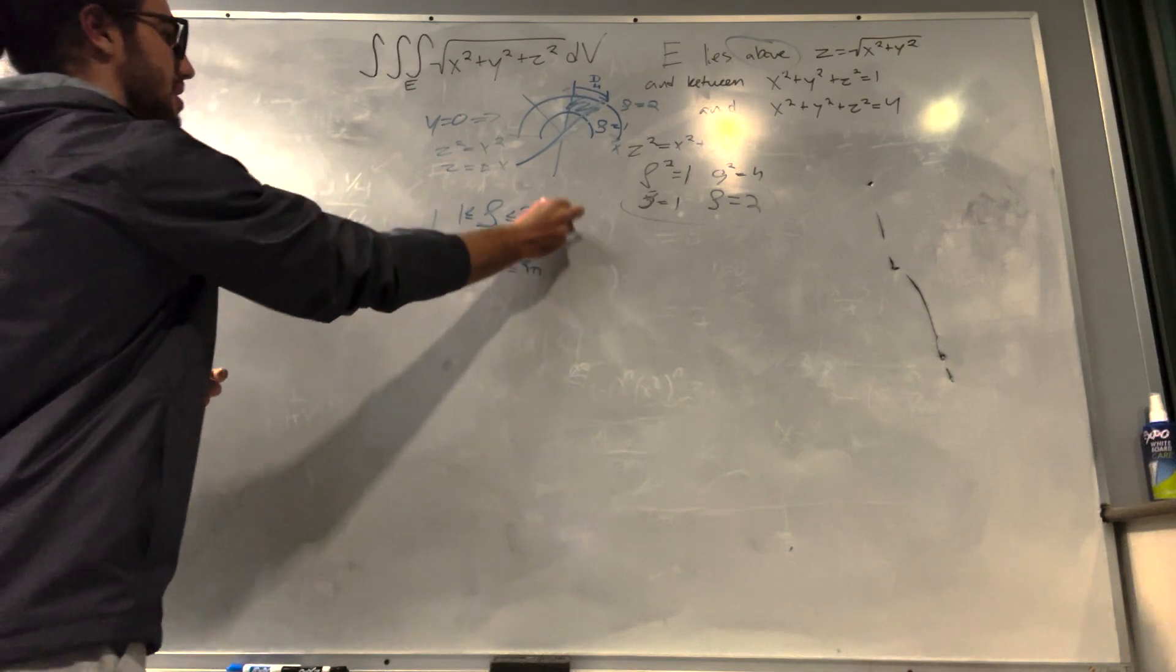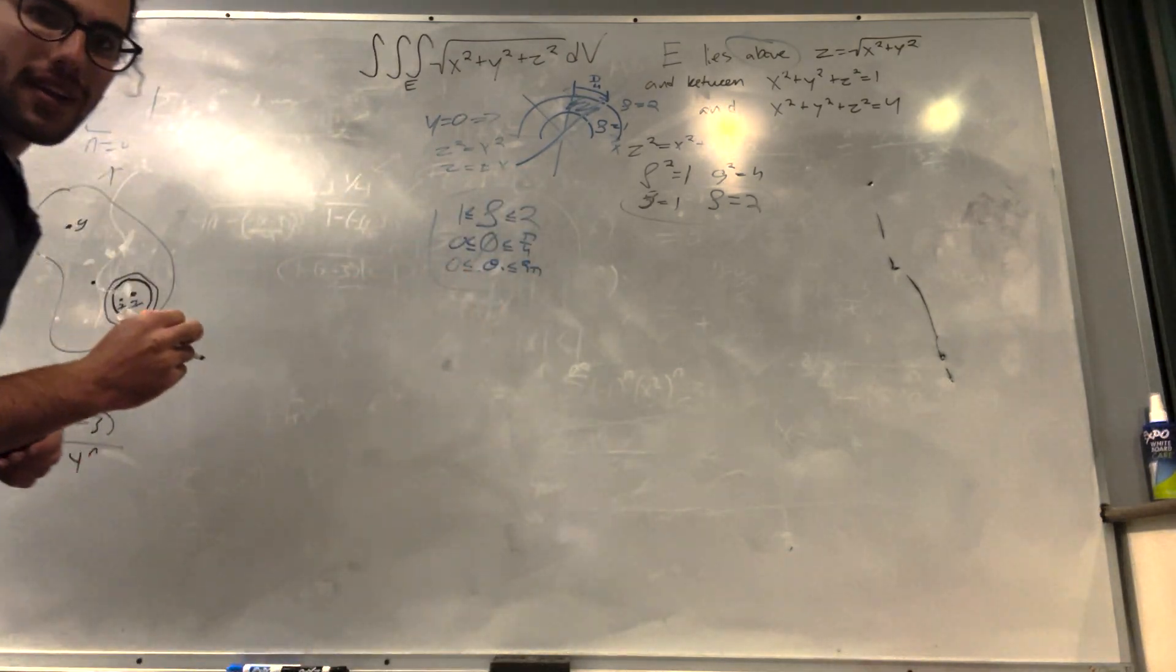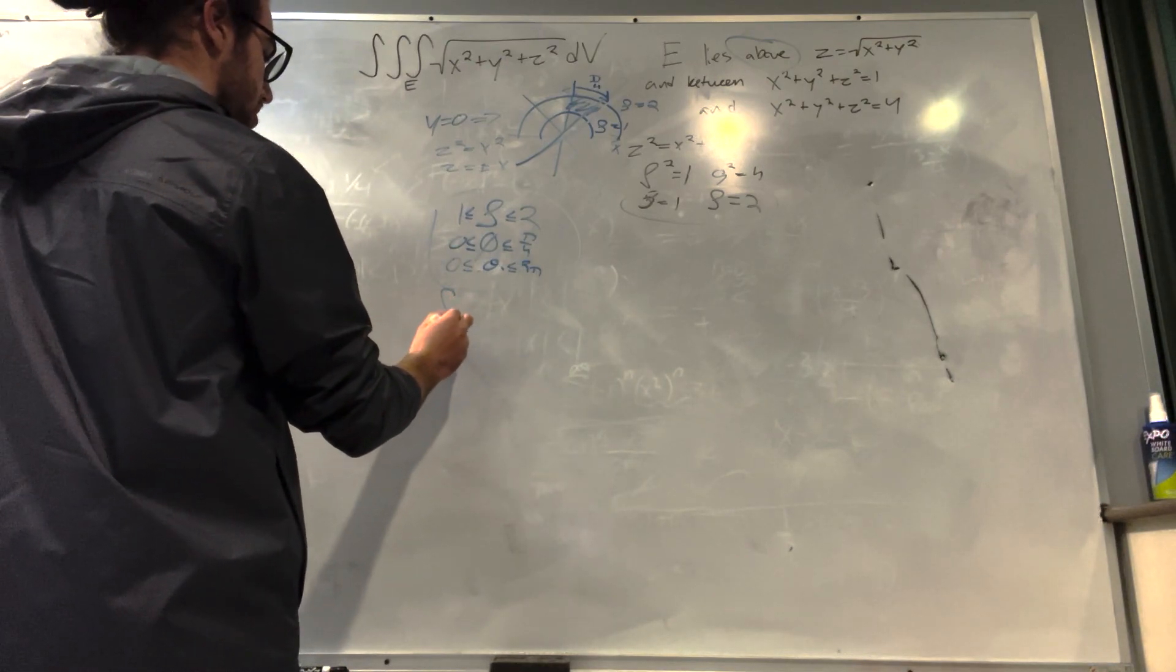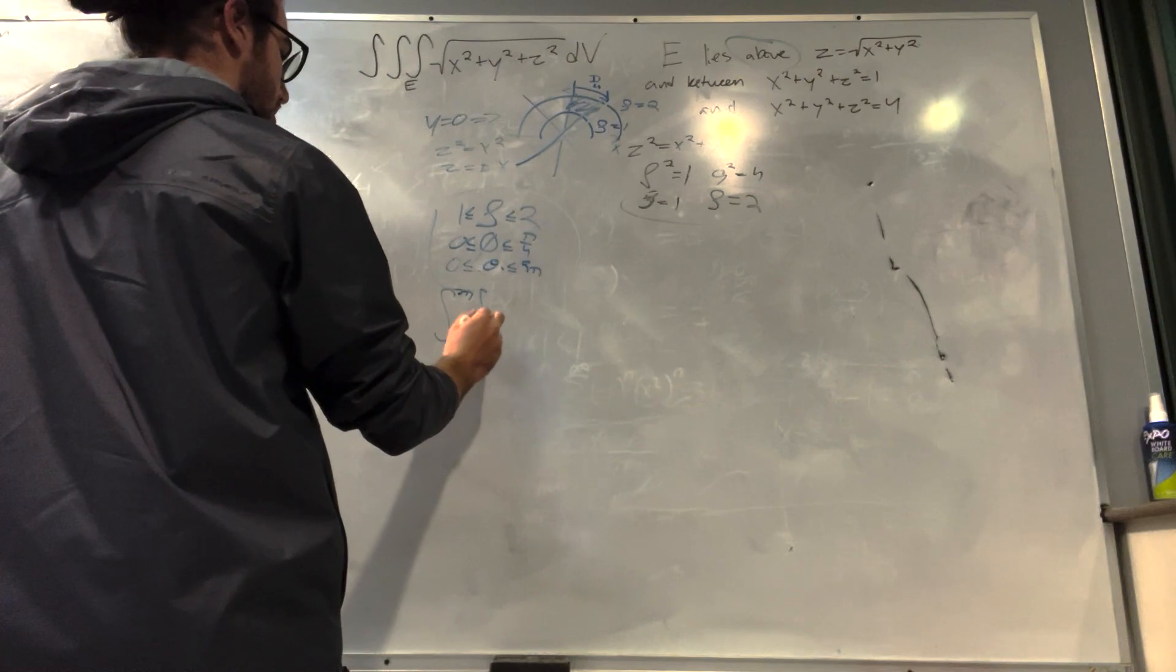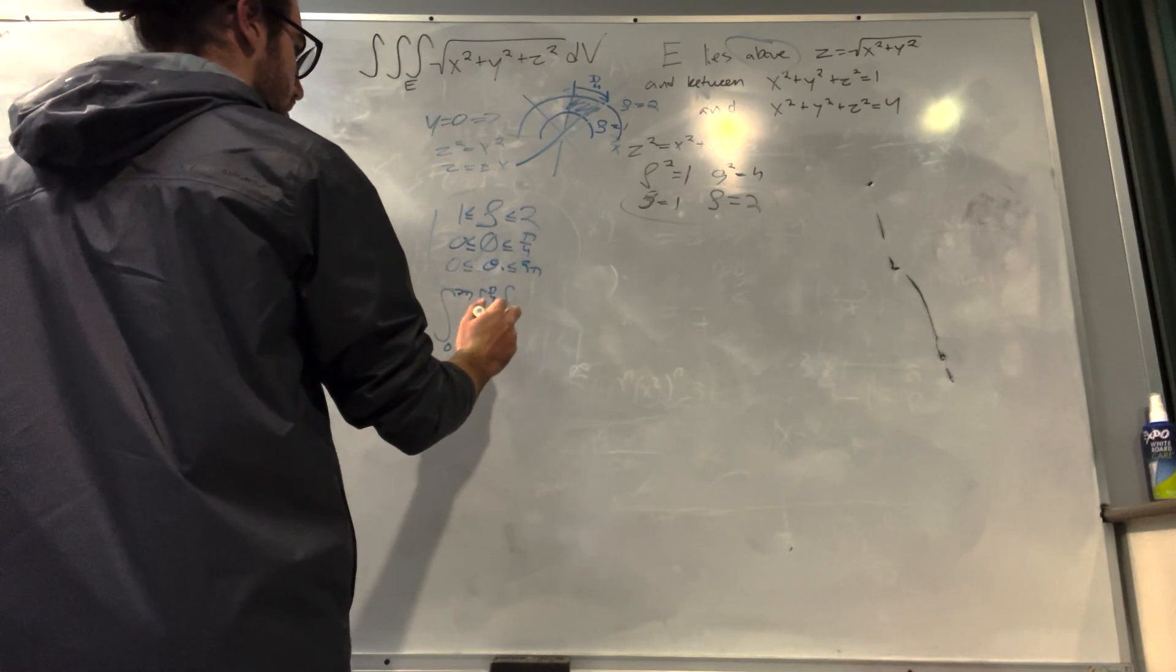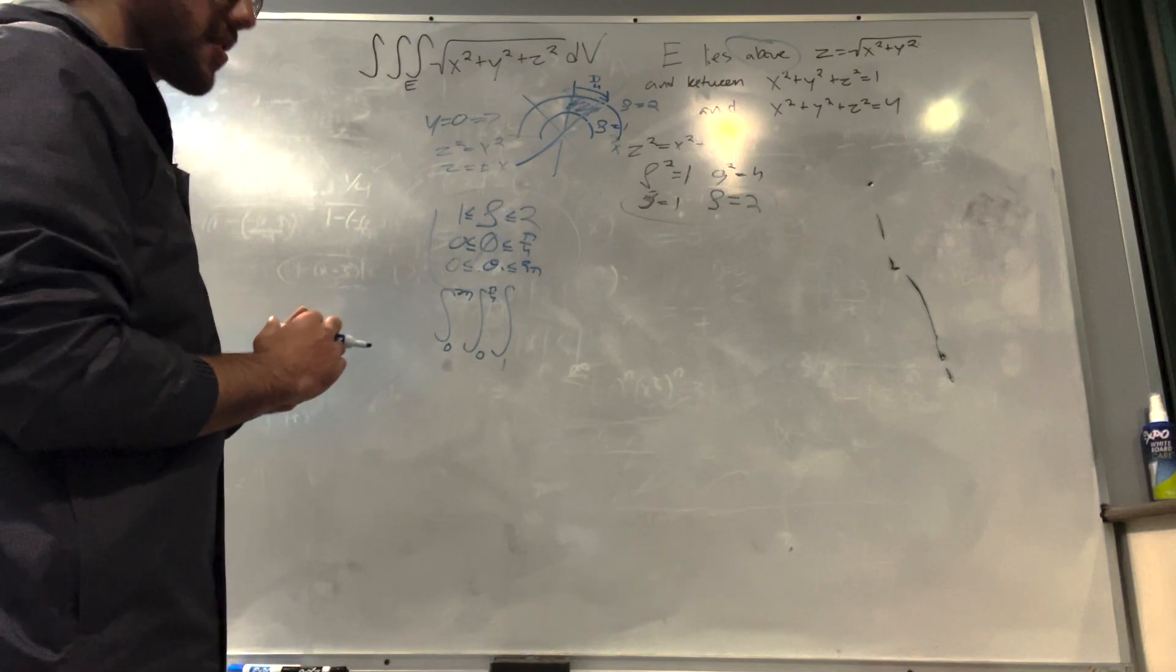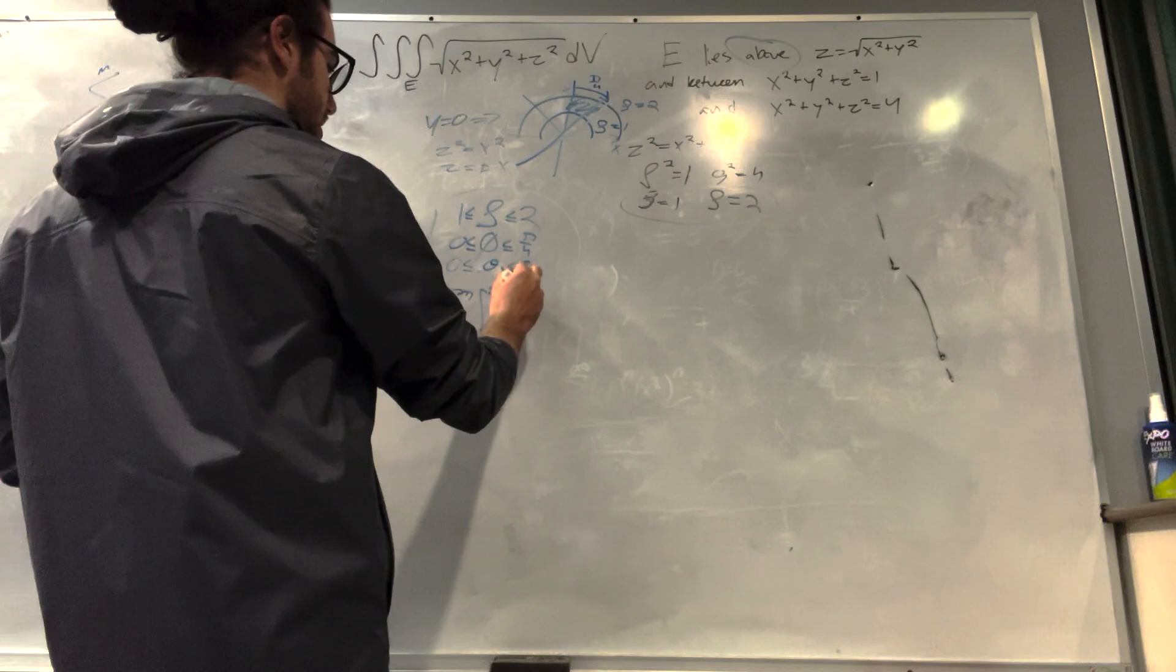All right, so now that we have our bounds, we can set up our triple integral. So where should I set it up? I'm going to have space over here. I'm going to set it up right here. So on the outside is our theta, 0 to 2 pi. Our second one is our phi, 0 to pi over 4. And our inside is rho, that goes from 1 to 2.